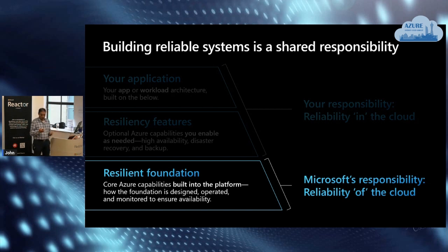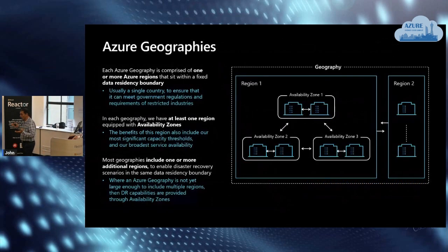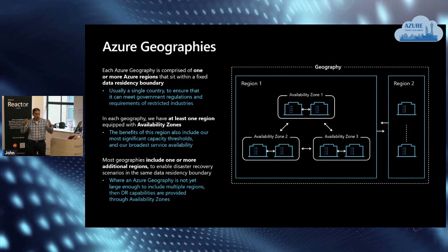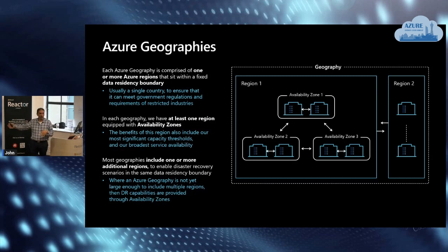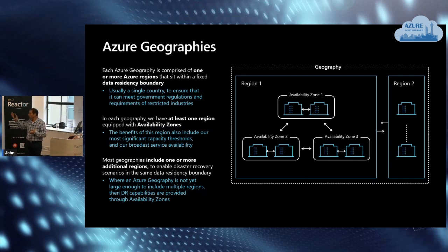What does it mean for Microsoft to provide a resilient cloud? We have geographies — different from regions. A geography is a combination of multiple regions together. Australia happens to be a geography. At the moment we have Australia East and Australia Southeast, and New Zealand is coming — the data center announcement has been made, and the go-live date should be sometime this year. Geographies are usually in pairs.